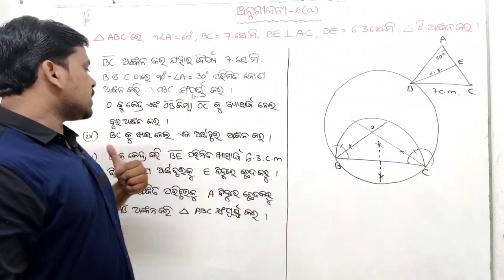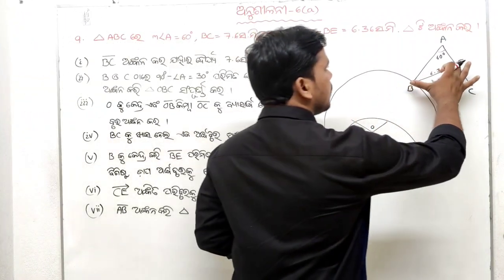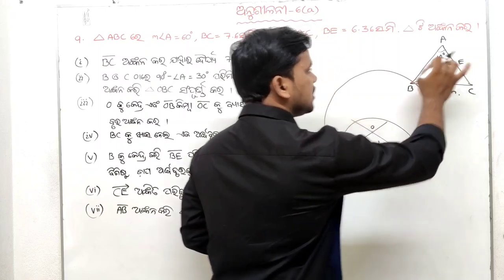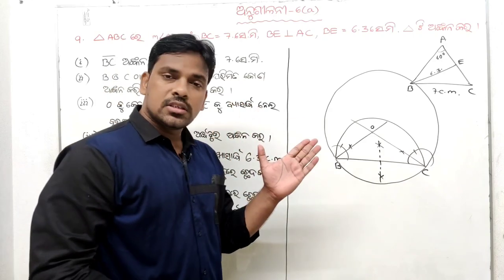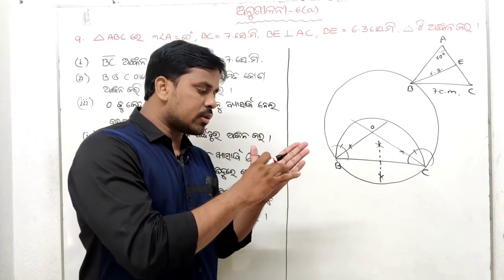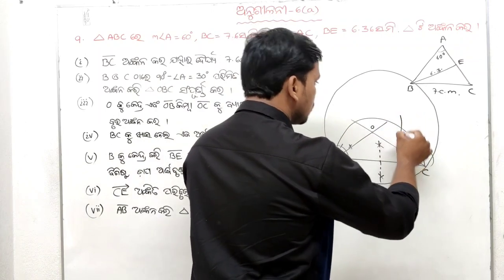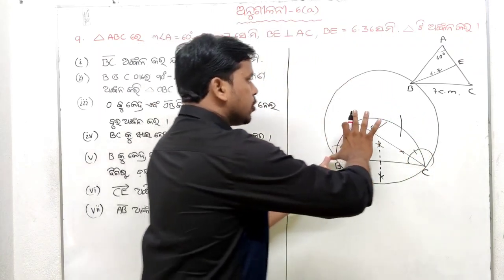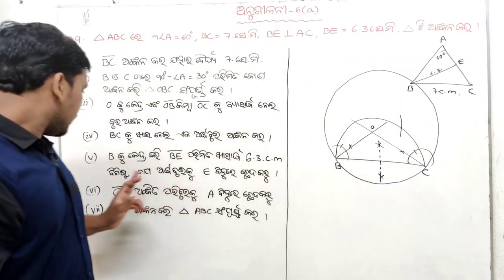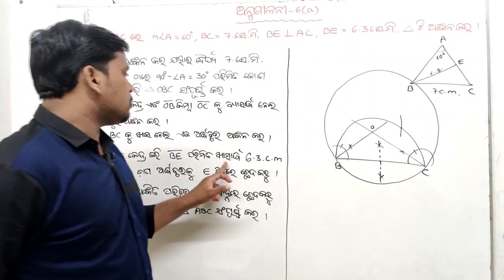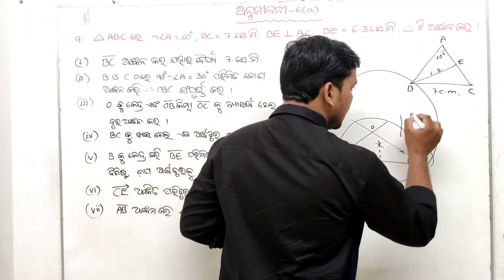Next, B is 6.3 cm. If you ask B, E is 6.3 cm, then B is 6.3 cm. AB equals 6.3 cm.